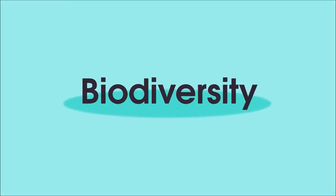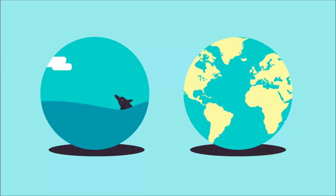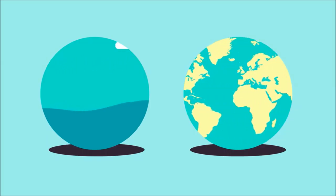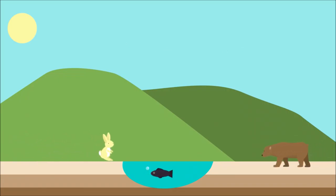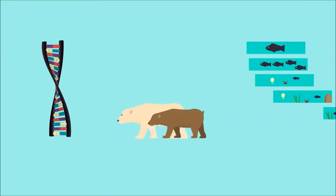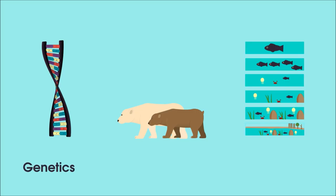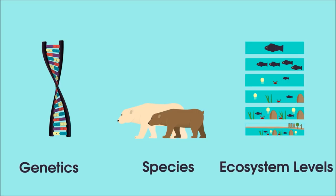Biodiversity is a key concept in ecology and has importance on both local and global scales. Biodiversity is the degree of variation of life, or put more simply, the number of different individuals and life forms in an area. Scientists usually measure biodiversity on either genetic, species, or ecosystem levels.